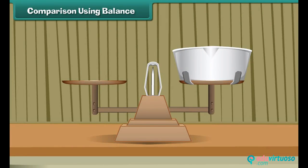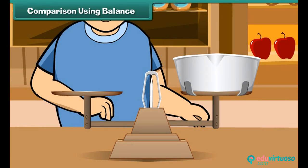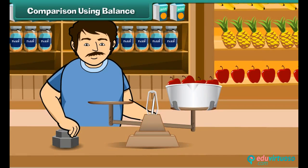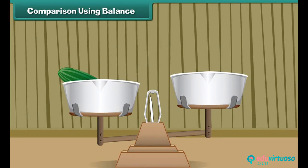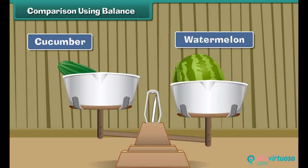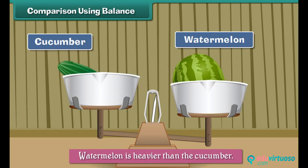Look at this picture. Where have you seen this? Yes, in shops. It is called a balance, and it is used to measure weights. An apple seller weighs apples by placing the apples on one side and the weights on the other side of the balance. The balance can also be used to compare weights. Place a cucumber on one side and a watermelon on the other side of the balance. The side that has the watermelon goes down, which means that the watermelon is heavier than the cucumber.